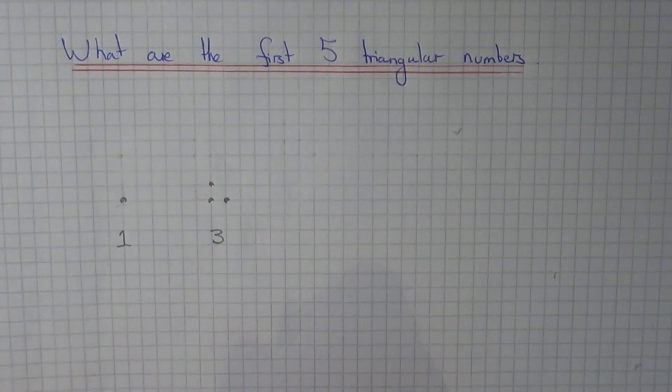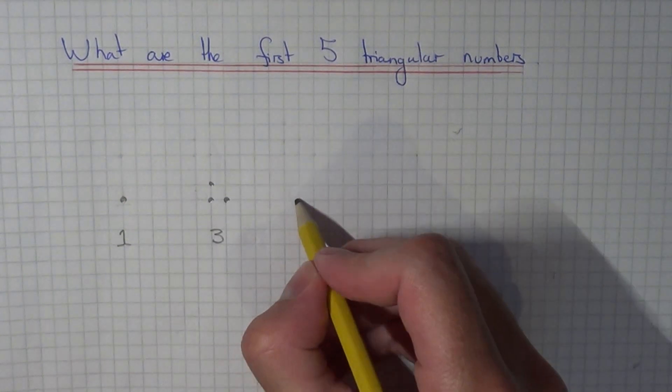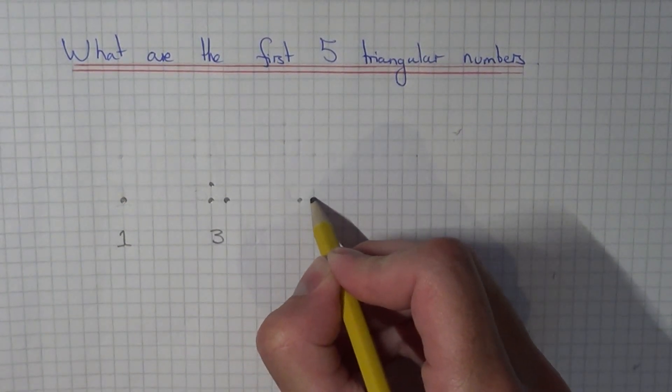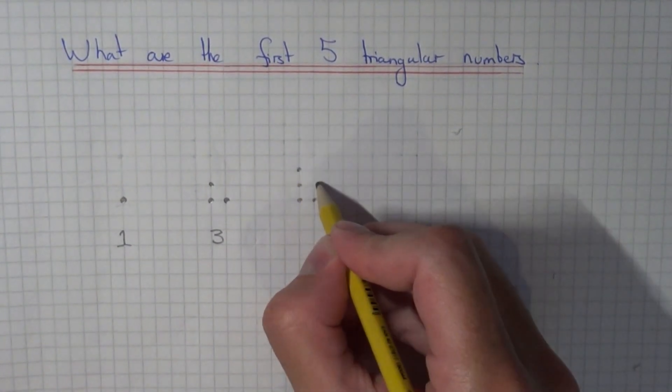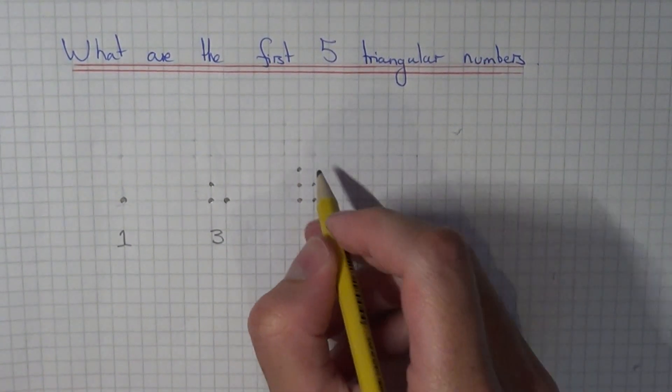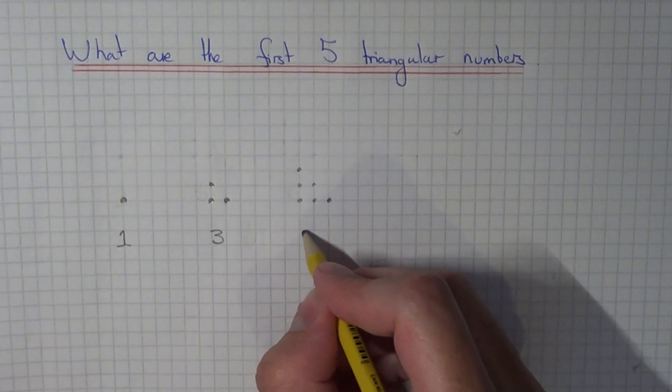So for our next pattern we copy down the one we've just done again, and we just need to put another diagonal row of dots. So all together now we've got six dots.